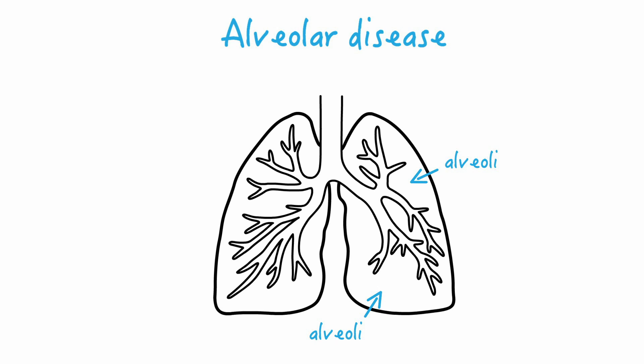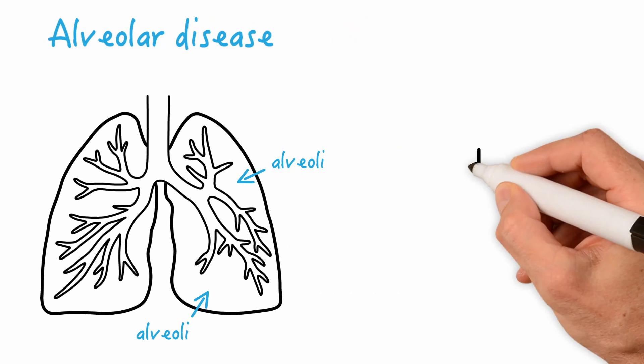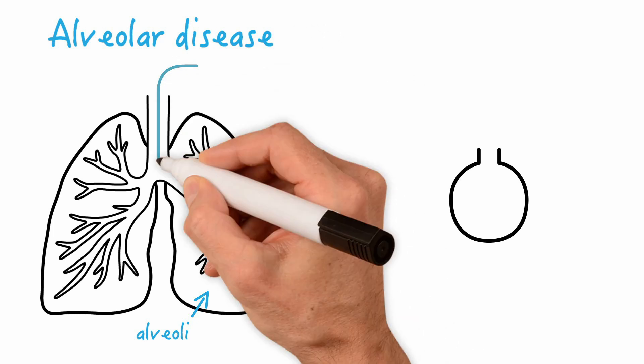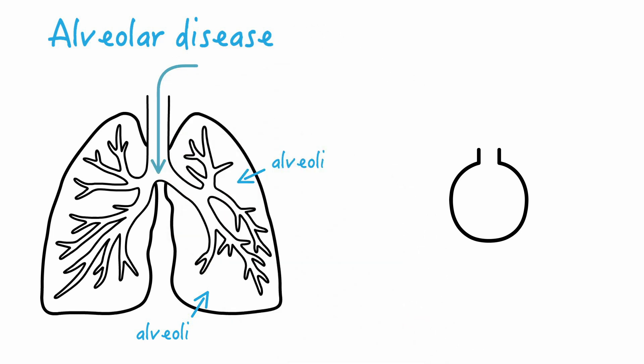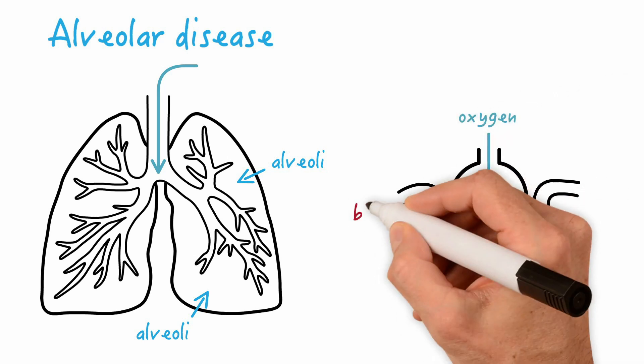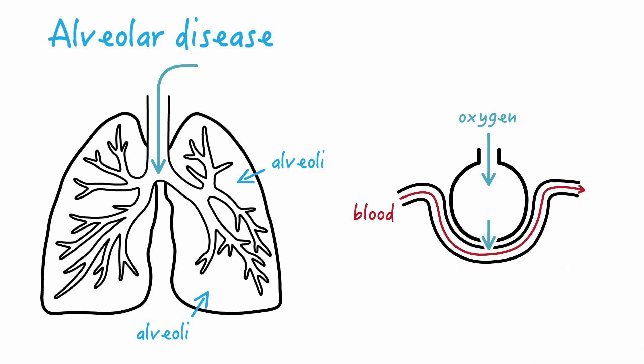Let me show you a cartoon of what one alveolus is as well as its purpose. Here is one magnified alveolus. Notice that this is not an airway — this is where air terminates into. As air is inhaled through the airways, air eventually ends up going into the alveoli, which are tiny little air sacs. From the alveolus, oxygen can diffuse into the pulmonary bloodstream, and this is where blood becomes richly oxygenated.